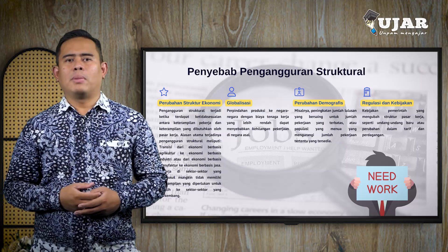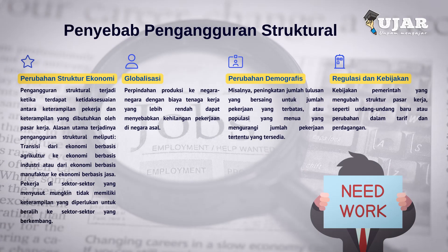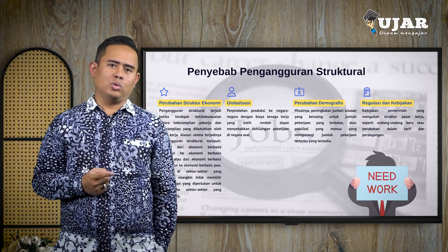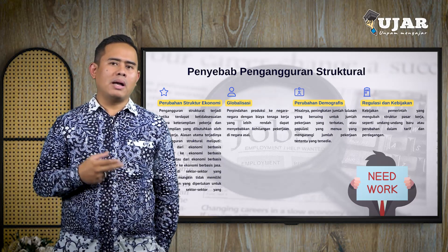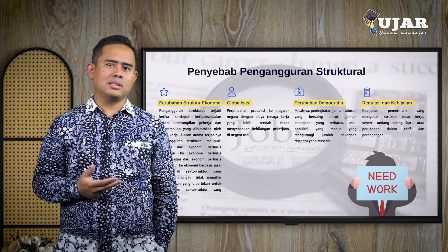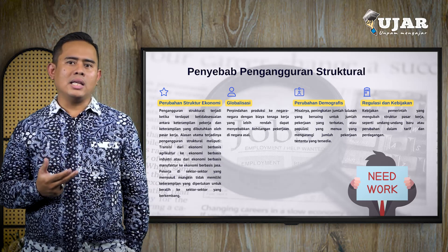Teman-teman mahasiswa, materi keempat pada pertemuan ini adalah penyebab terjadinya pengangguran. Pengangguran dapat disebabkan oleh berbagai faktor yang dikategorikan ke dalam beberapa jenis: pengangguran struktural, pengangguran teknologi, dan pengangguran ekonomi. Yang pertama, pengangguran struktural terjadi ketika terdapat ketidaksesuaian antara keterampilan pekerja dan keterampilan yang dibutuhkan oleh pasar kerja. Alasan utamanya meliputi: pertama, perubahan struktur ekonomi — transisi dari ekonomi berbasis agrikultur ke industri atau dari manufaktur ke jasa, di mana pekerja di sektor yang menyusut mungkin tidak memiliki keterampilan yang diperlukan untuk beralih ke sektor yang berkembang.